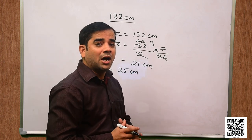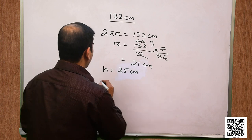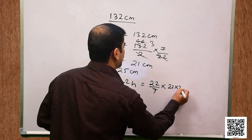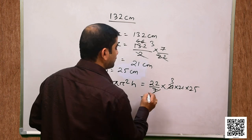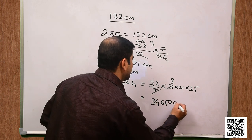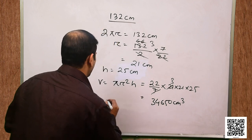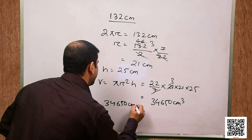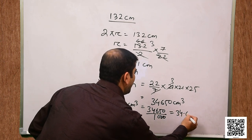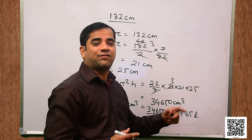The question demands the volume of water that can be kept inside the vessel, equal to the volume of the vessel. Volume = πr²h = (22/7) × 21 × 21 × 25, giving 34650 centimeter cube. Since 1000 cm³ = 1 liter, 34650 cm³ = 34.65 liters. So the cylindrical vessel can hold 34.65 liters of water.